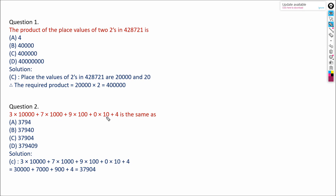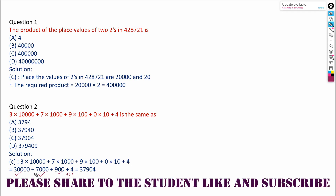This is the expanded value of one of the given numbers and we have to find which number it represents. Solving the expression: 3 × 10,000 = 30,000; 7 × 1,000 = 7,000; 9 × 100 = 900; 0 × 10 = 0; plus 4. Adding all these up gives us 37,904.